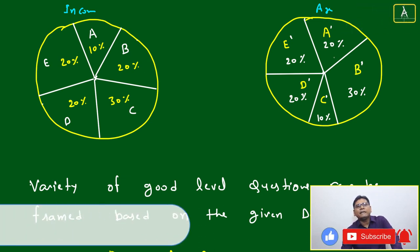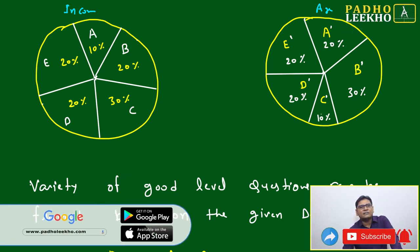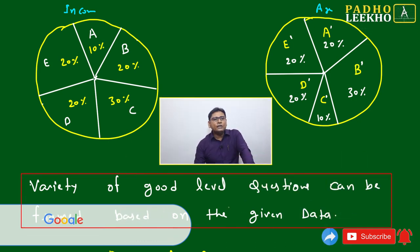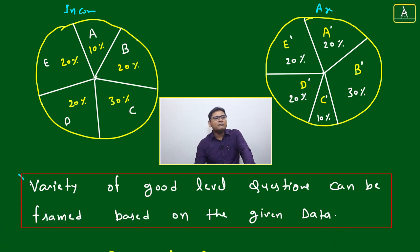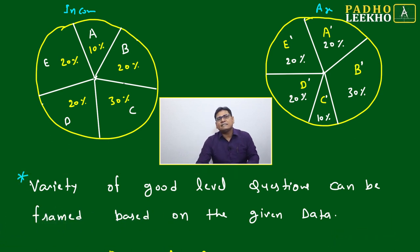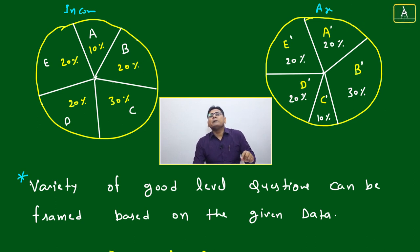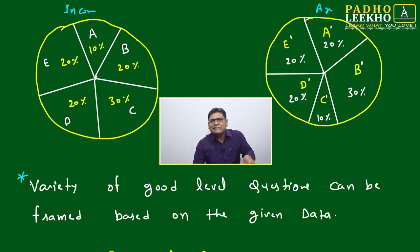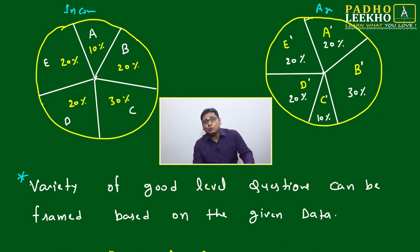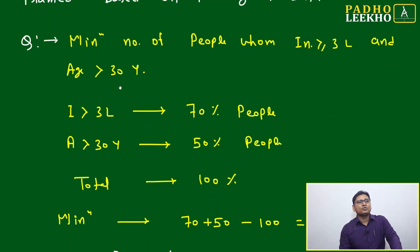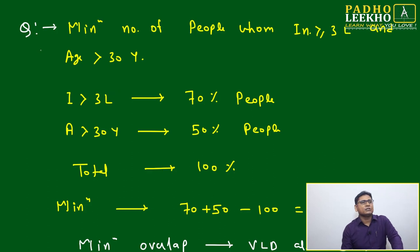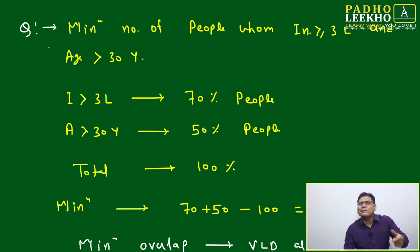So here is the income-based pie chart: A is 10%, B is 20%, and so on — the contribution of A, B, C, D, E totals 100%. For the age-based pie chart: A-dash is 20%, B-dash is 30%, C-dash is 10%, D-dash is 20%, and E-dash is 20%. A variety of good-level CAT questions can be framed from this data. I will show in many sessions how to create very good CAT-level mathematical and logical questions from just these two pie diagrams.